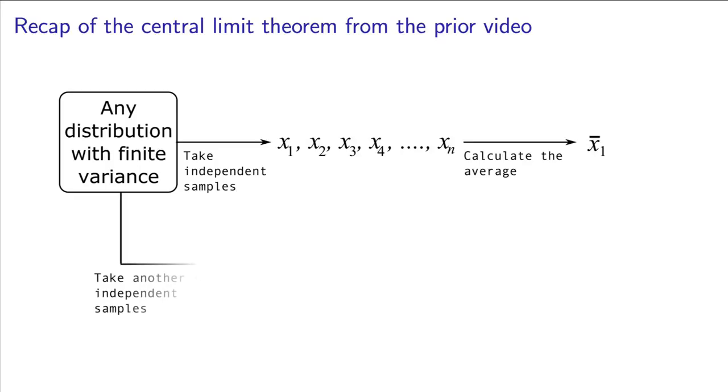That calculated average value is from the normal distribution. If we repeated that and took another set of samples from the same process and calculated the average, we would get a different average value. But that second value is also from the normal distribution.